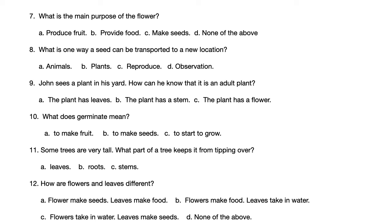Number 9. John sees a plant in his yard. How can he know that it is an adult plant? A. The plant has leaves. B. The plant has a stem. C. The plant has a flower.